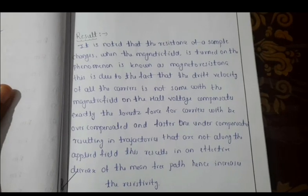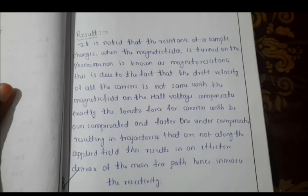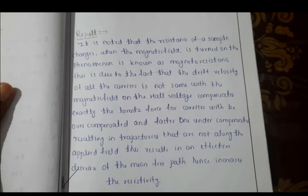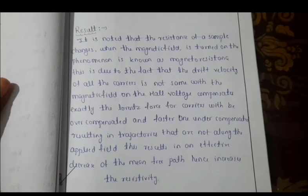This is due to the fact that the drift velocity of all the carriers is not the same. With the magnetic field on, the Hall voltage compensates exactly the Lorentz force for carriers with